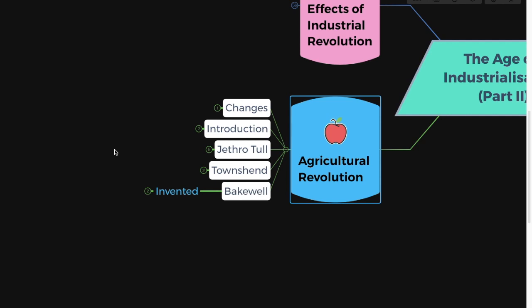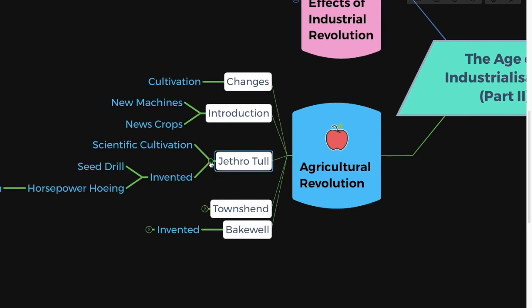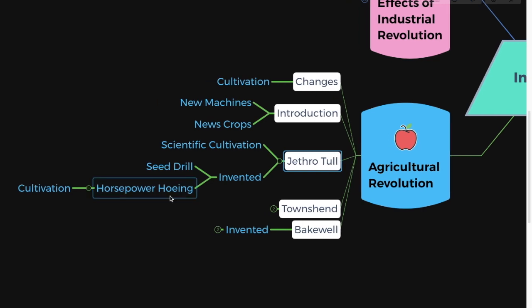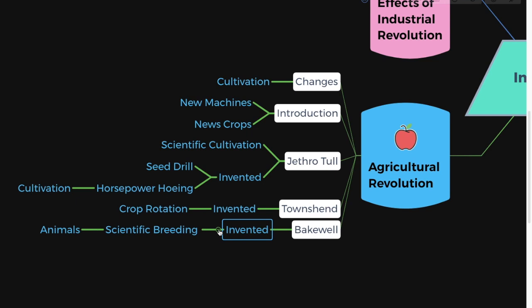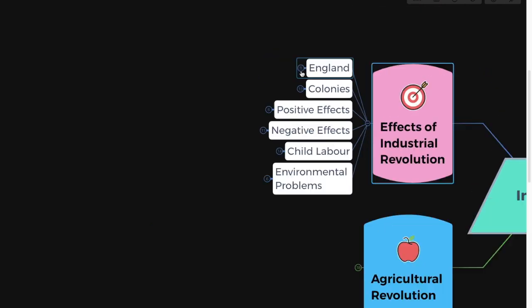With transportation and communication set up, there was also a revolution in the agricultural sector. Changes in the condition of cultivation of land is called the agricultural revolution. During this time there was introduction of new machines and new crops. Jethro Tull started to use a scientific way of cultivating crops and invented the seed drill and horse-powered hoeing. Townshend invented crop rotation, and Bakewell invented a scientific way of breeding animals.